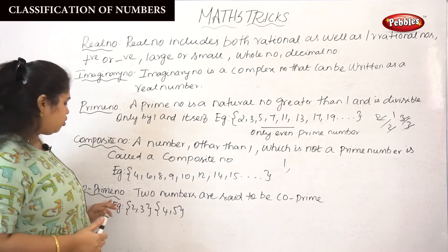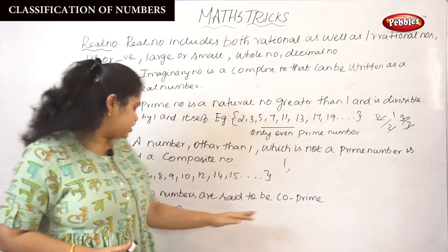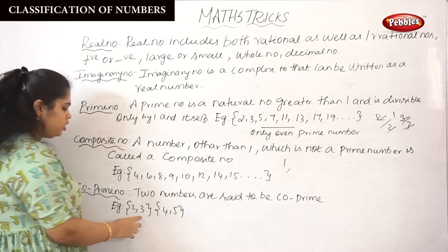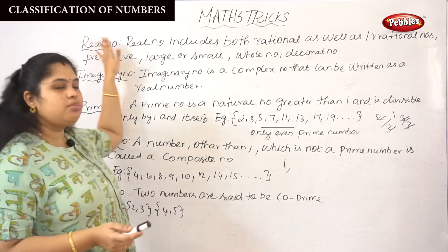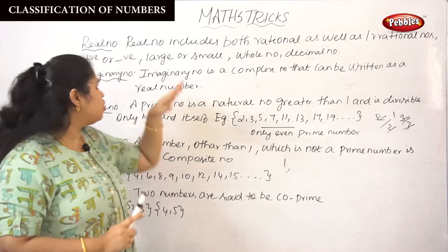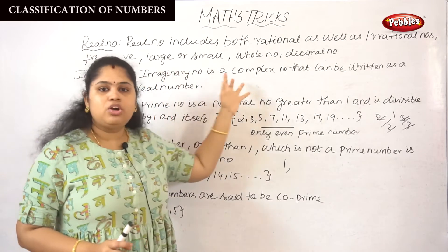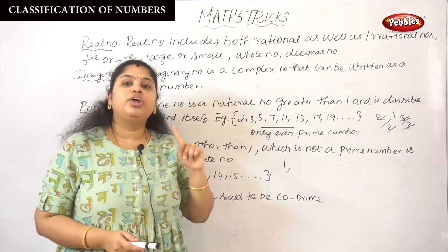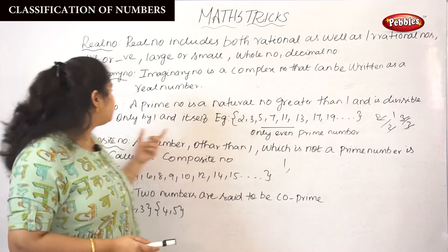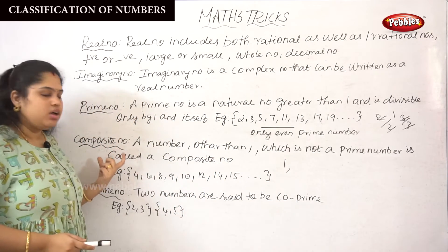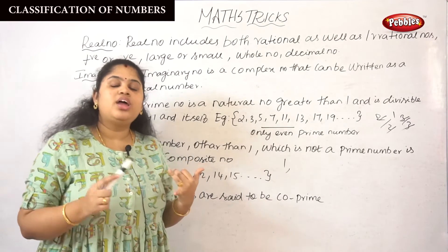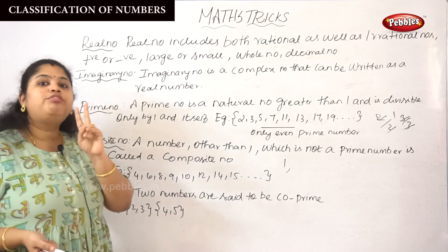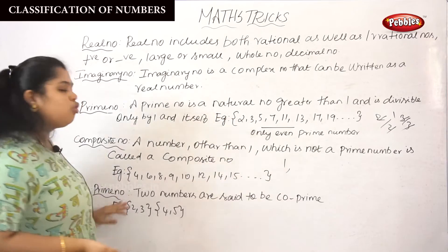Next, co-prime number. Two numbers are said to be co-prime when they form a set of two prime numbers — for example, 2 and 3, or 4 and 5. A set of two prime numbers is called a co-prime number. Real number means rational as well as irrational numbers. Imaginary number is a complex number that can be written as a real number. Prime number means greater than 1 and divisible by itself. Composite number means every number except 1 and prime numbers. Co-prime number means a set of two prime numbers.